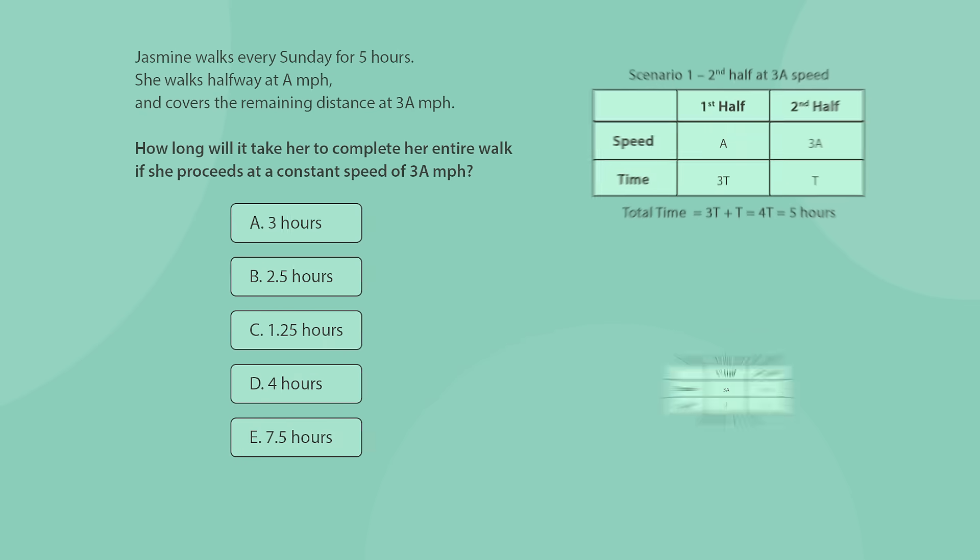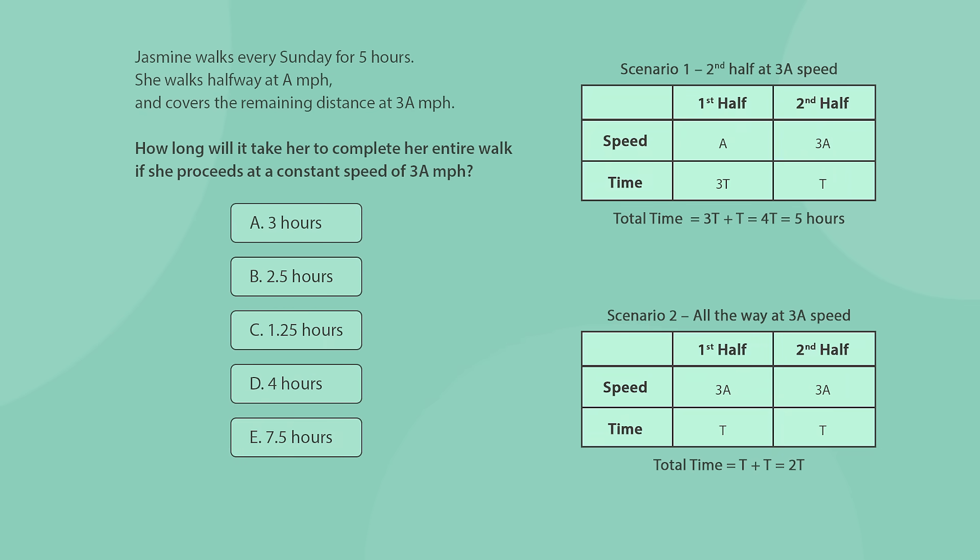So, let's create a table for each scenario, detailing Jasmine's walking time and speed. In the first scenario, it takes Jasmine three times longer to complete the first half at speed A than the second half at speed 3A. In the second scenario, both halves take Jasmine the same time to complete. That means that the overall time in scenario 2 is exactly half the time in scenario 1. So, the correct answer is B.